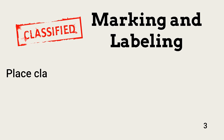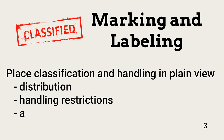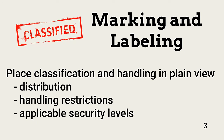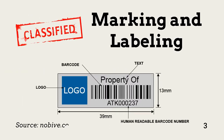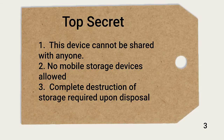Marking, or labeling, requires placing asset classifications in plain view so anyone using or handling the asset understands distribution, handling restrictions, and applicable security levels. One way to quickly provide this information is via an application that scans an asset tag barcode. The result of the scan provides handling information about the asset. A paper tag may also be used — this is an example of what it might look like.